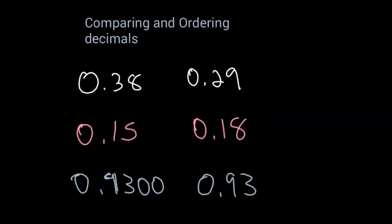We're going to compare and order decimals. When you compare and order decimals, you do that just like you would any other numbers that you're comparing. So you start with the first number: zero, zero, it's the same. Three and two - well three is greater than two, so that makes the 38 hundredths greater than 29 hundredths.